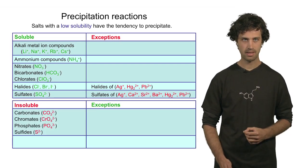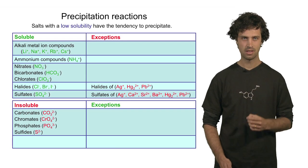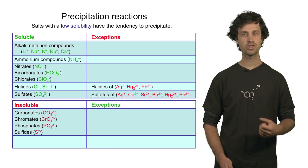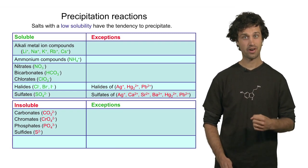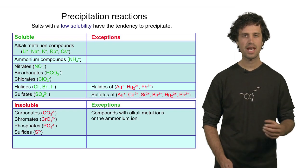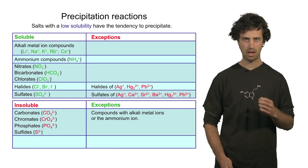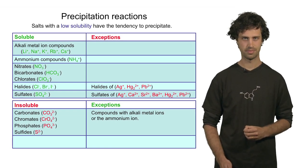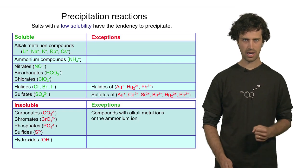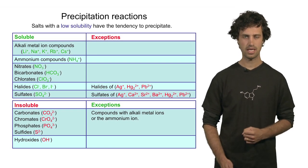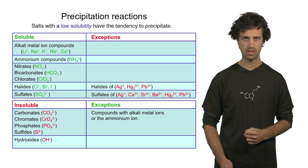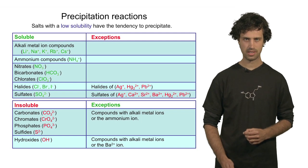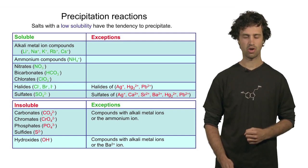On the other hand, we find that carbonates, chromates, phosphates, and sulfides are compounds that are insoluble in water. However, there are exceptions again. When these anions combine with alkali metal ions or the ammonium ion, then the compound is soluble. And finally, hydroxides are compounds that are generally insoluble in water. However, when the hydroxide anion combines with an alkali metal ion or with barium(II)+, then the compound is soluble in water.